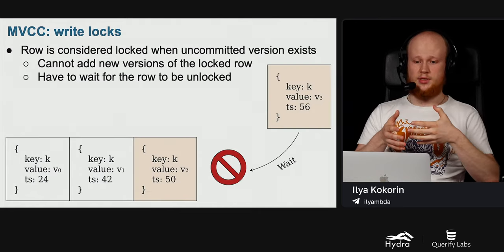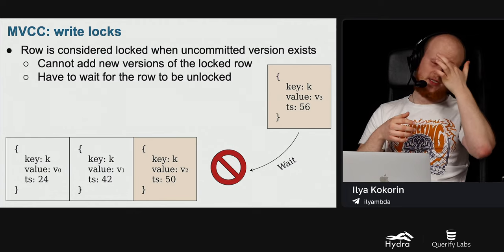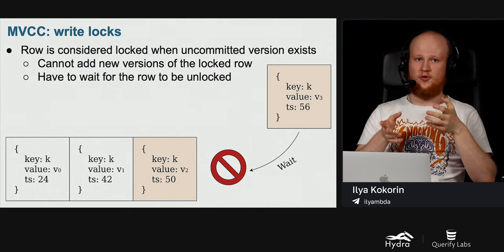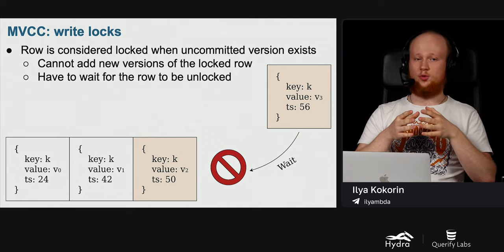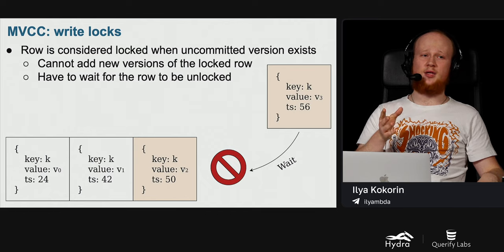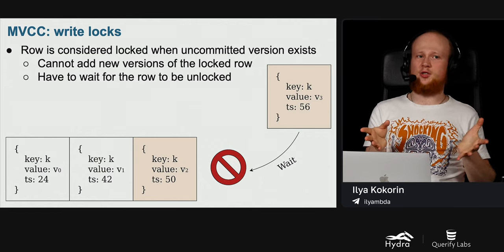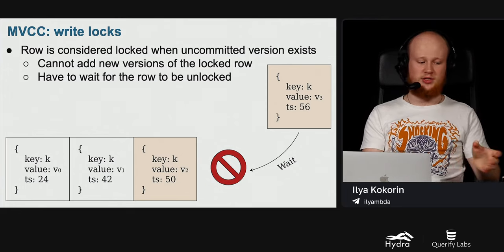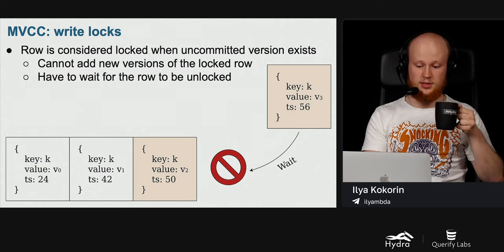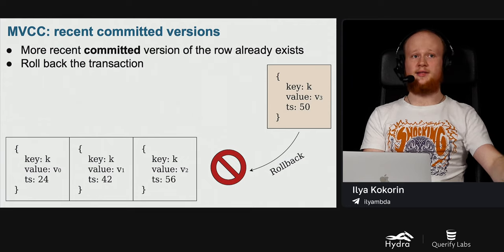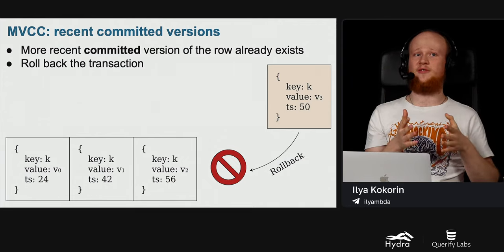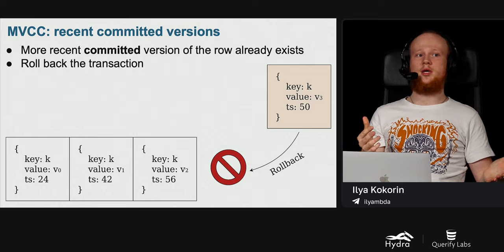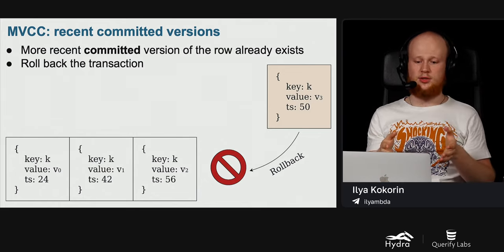In MVCC, we still have write locks even without read locks. A row is considered locked when an uncommitted version exists — we can still read the row, but cannot add a new version of the locked row. We wait until the transaction that created the uncommitted version either commits or rolls back. If we try to create an uncommitted version and find that a more recent committed version already exists, we must roll back our transaction, because a more recent transaction has already modified the row.